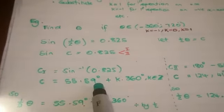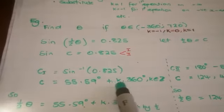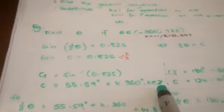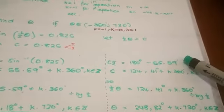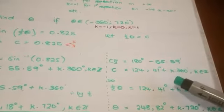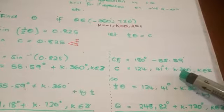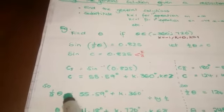So I find C in the first quadrant. It gives me 55.59, and then because it's a general solution, I'm going to write plus K times 360, where K is an integer. Then I do the second quadrant. C2 would have been 180 minus 55.59, and it is 124.41 plus K times 360, where K is an integer.